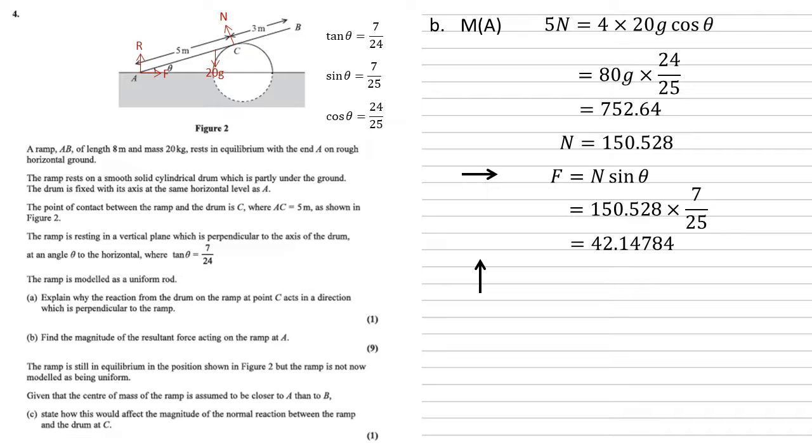We can now resolve vertically to find R. Upwards we've got R and N, this time N cos theta. Downwards we've just got 20G. So R plus N cos theta equals 20G. Therefore R equals 20G minus N of 150.528 times cos theta of 24 over 25, which equals 51.49312.